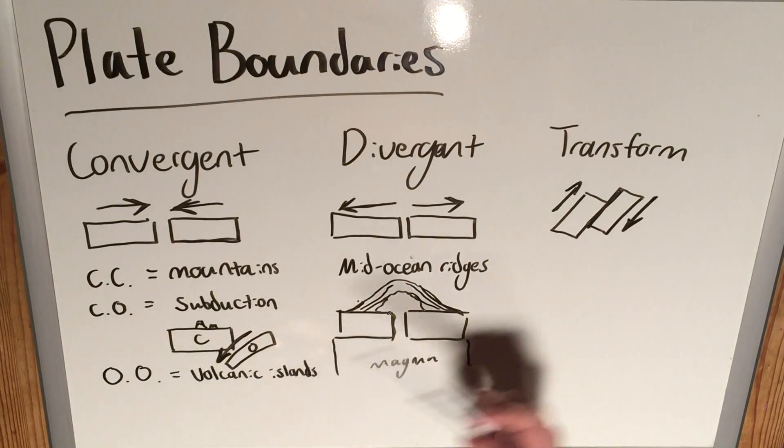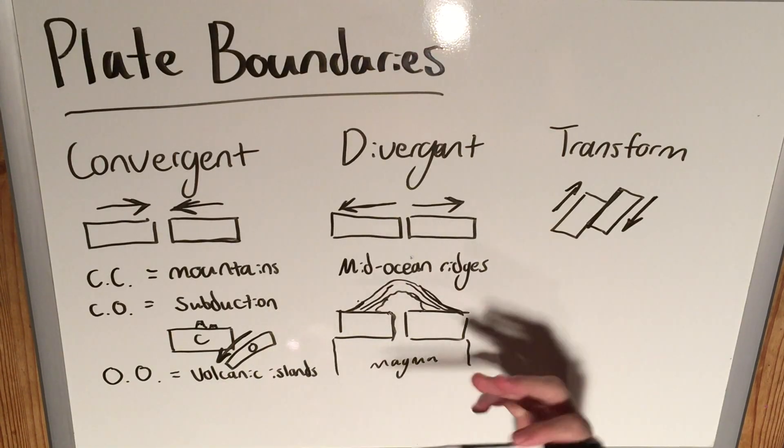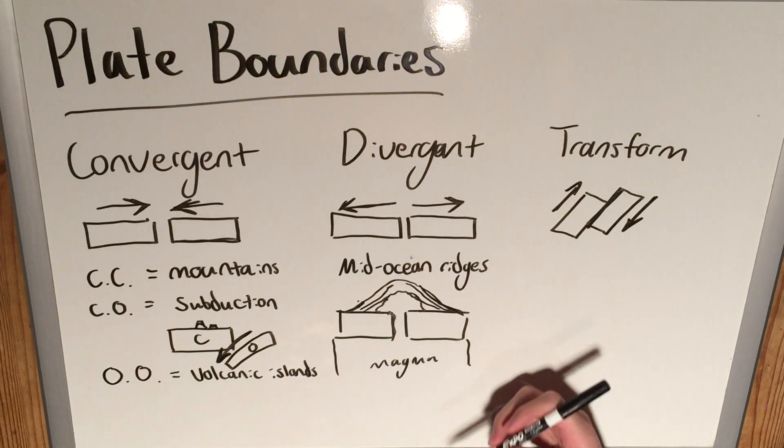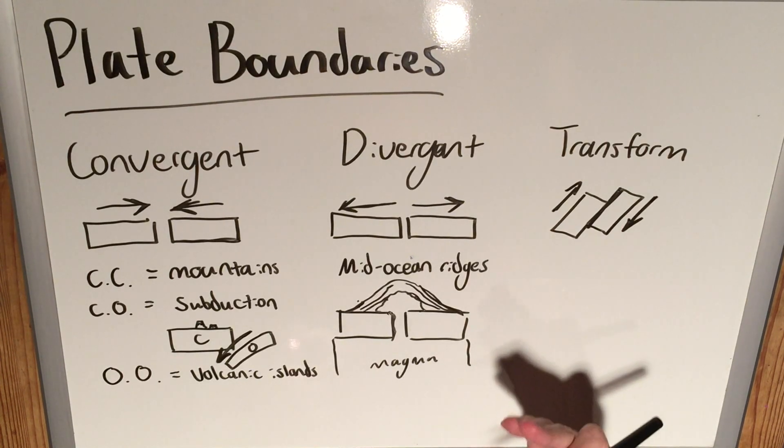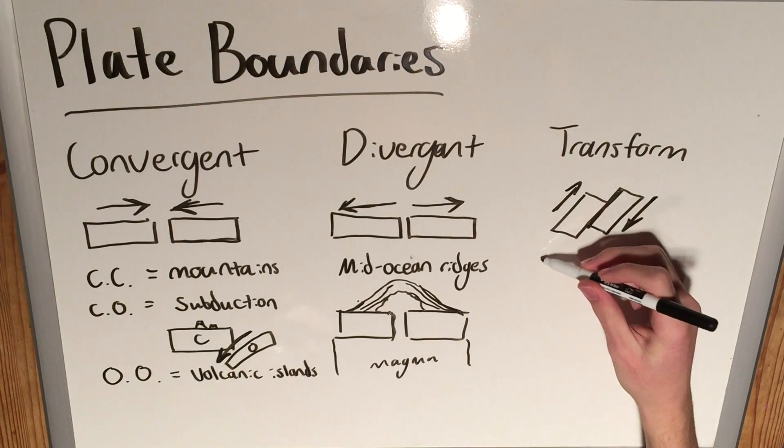And convergent, or specifically subduction ones, are considered destructive because you have a plate subducting into the mantle and melting eventually. But transform are also called conservative because we don't really get any creation or destruction of any crust when they're just scraping past each other.